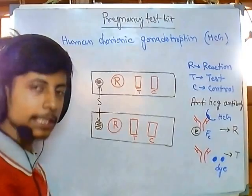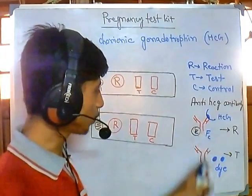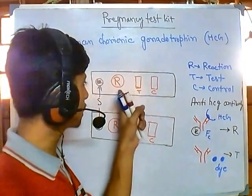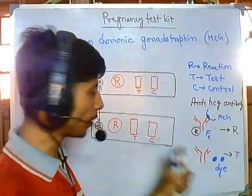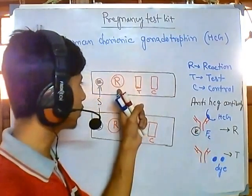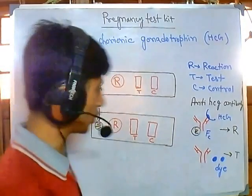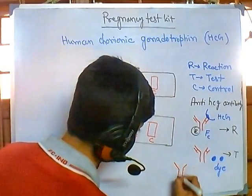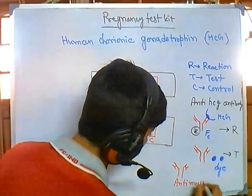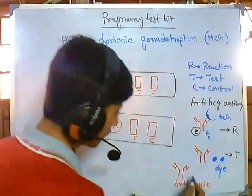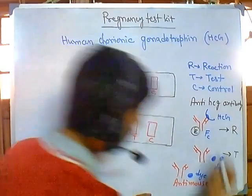In the control (C) region, there is another type of antibody — anti-mouse antibody. Remember that the FC portion of all antibodies present in R and T are generated in mouse. So the anti-mouse antibodies in the C region are designed to bind with the FC portion of those R and T antibodies. The C region also contains some dye.